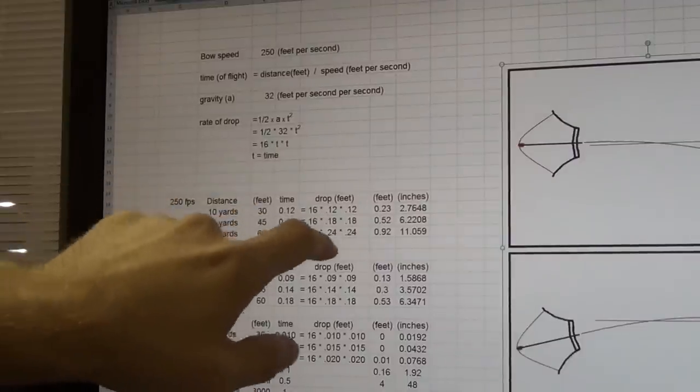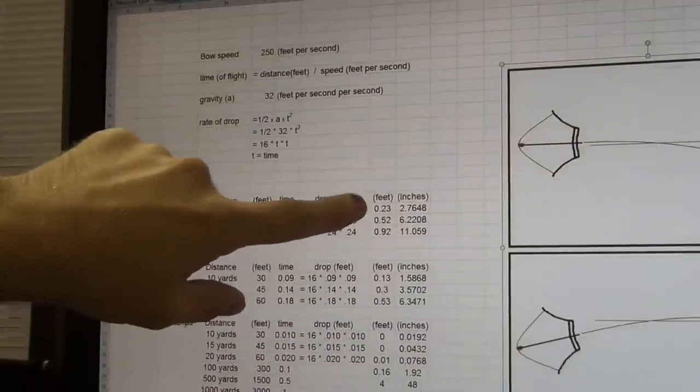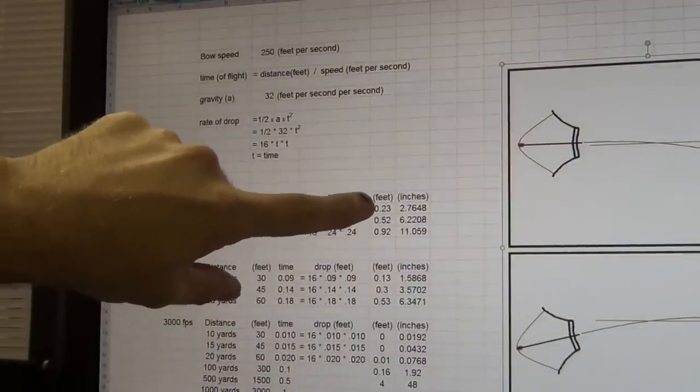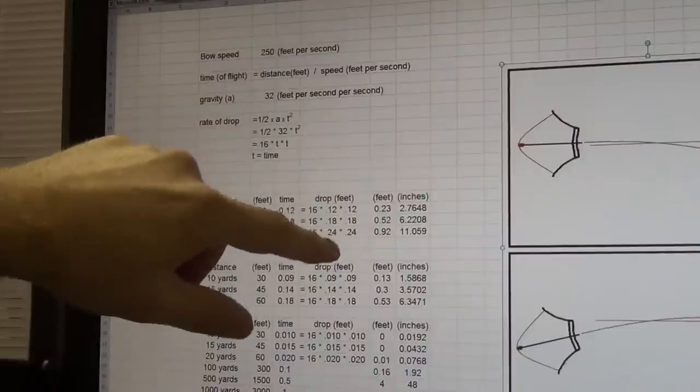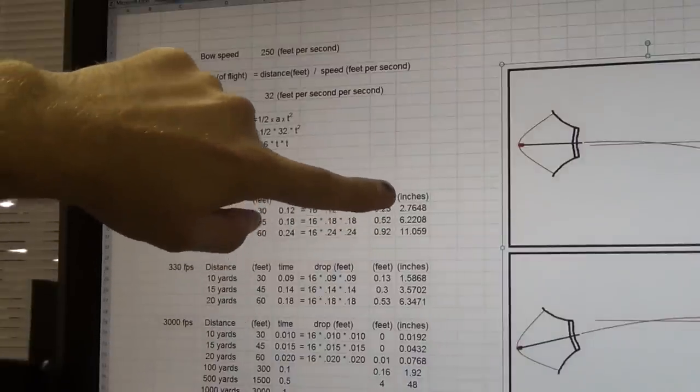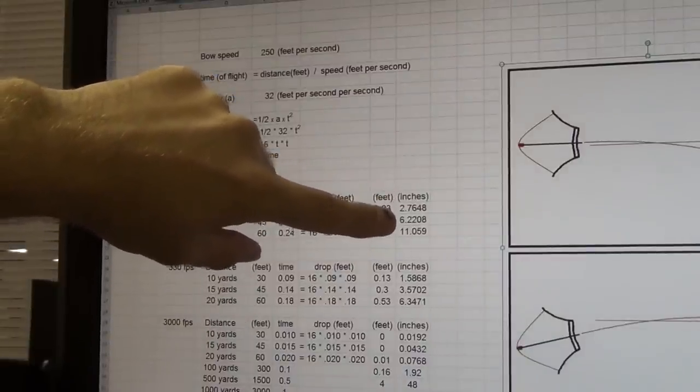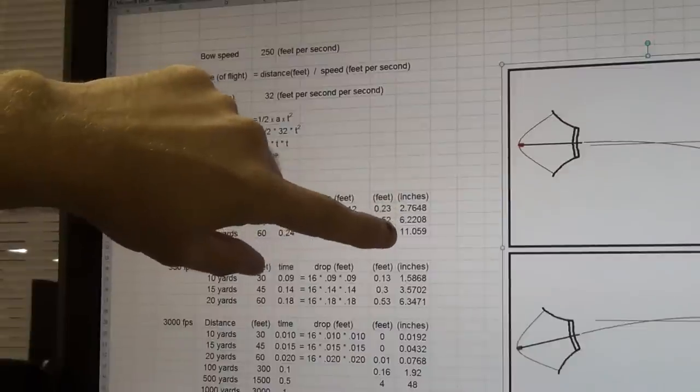Now, taking this equation, here's the numbers you get. And the drop you get is a quarter foot, half a foot, and almost nine-tenths of a foot. Or in inches, two and three-quarter inches, six and a quarter inches, and 11 inches flat.